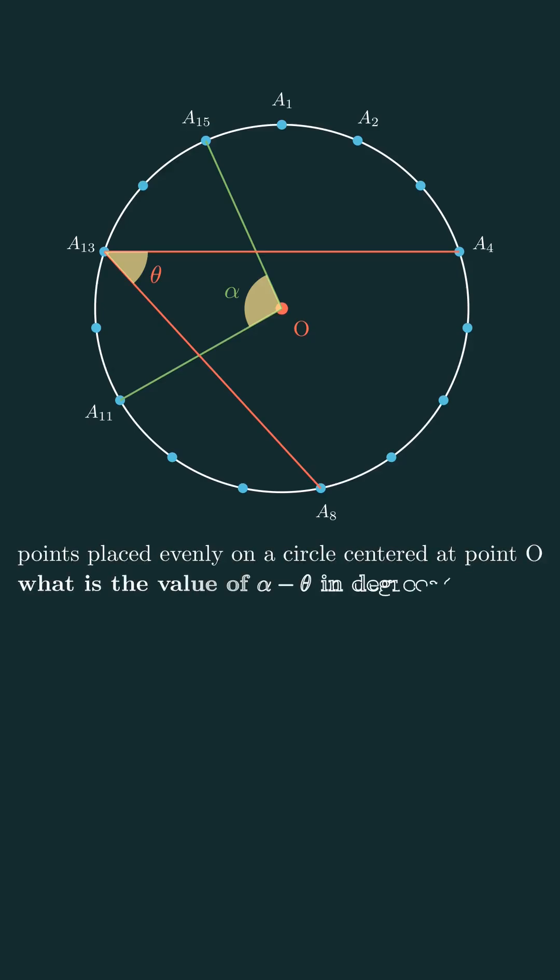Now, here's the question. Points placed evenly on a circle centered at point O, what is the value of alpha minus theta in degrees? Got any ideas?